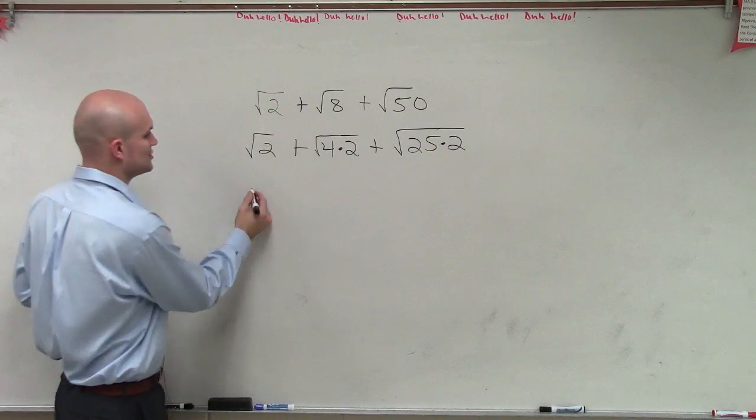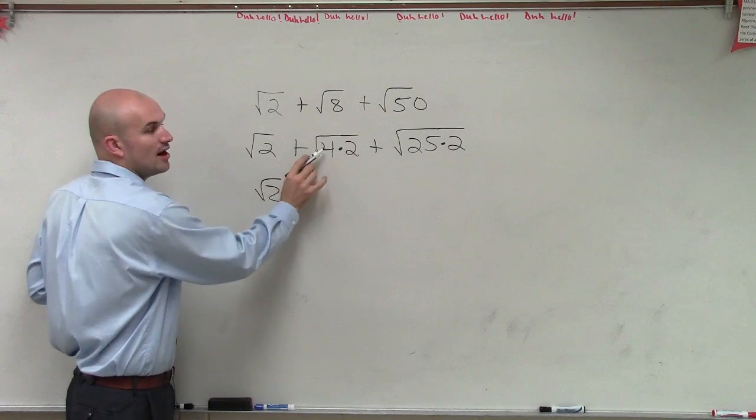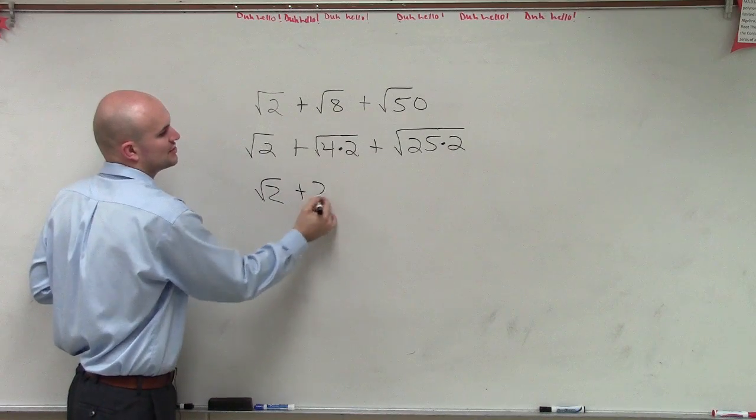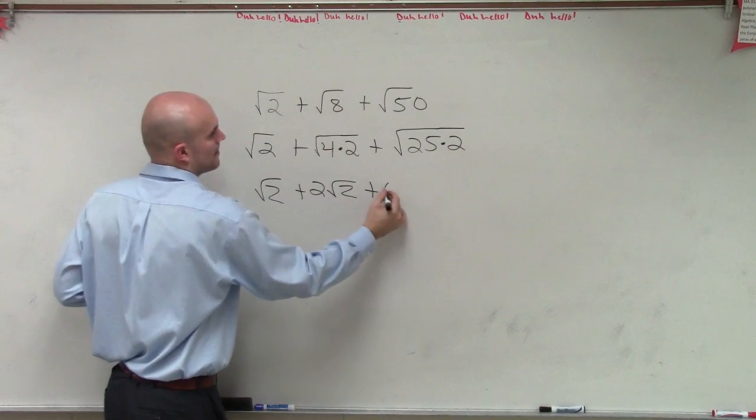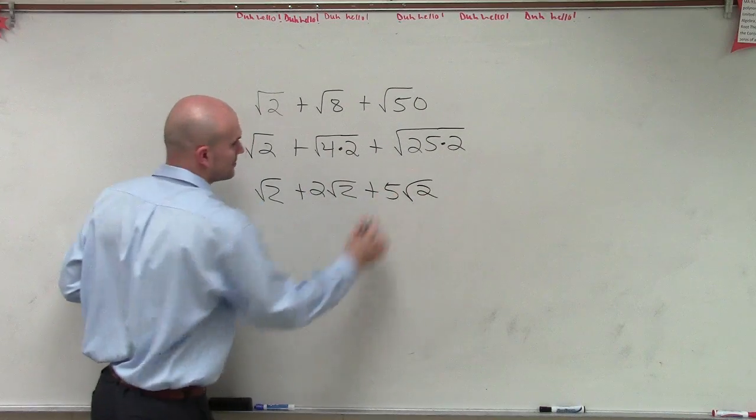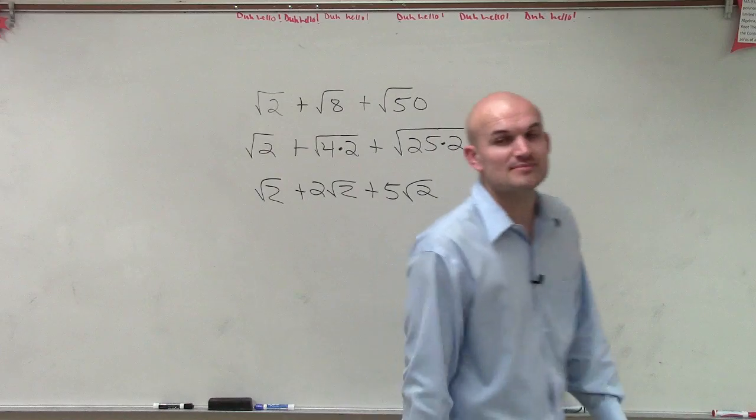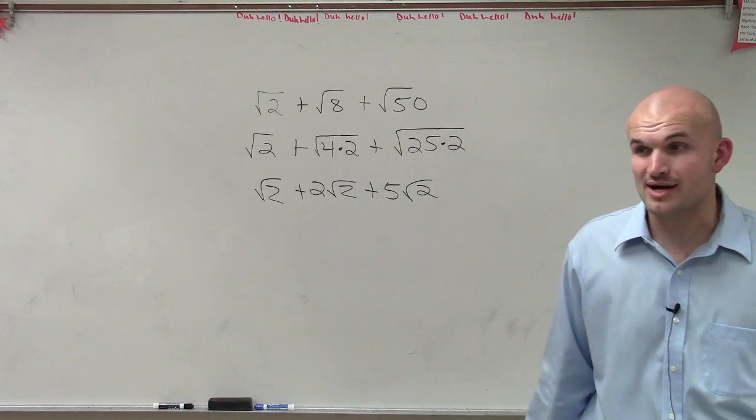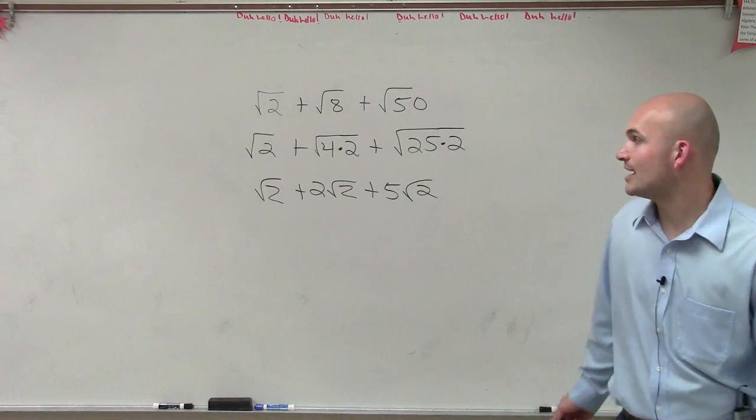Now, square root of 2 is still square root of 2. Do I know the square root of 4 now? That's 2 square root of 2. Do I know the square root of 25? 5 square root of 2. And now, you guys notice, I'm taking the square root of the same number, correct? So now I can combine them up.